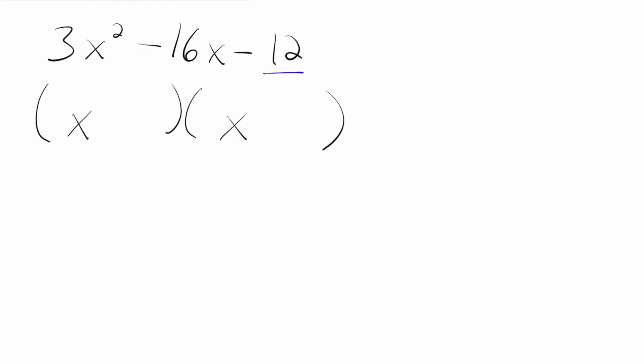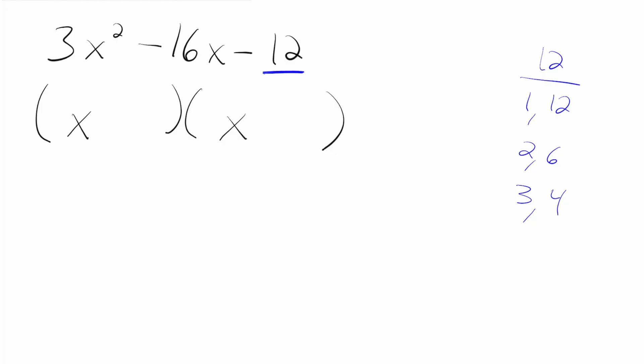I don't want you thinking about negatives or positives at all — do the signs at the very end of the problem. With that in mind, we're going to start with the number furthest on the right, that being 12, and write down all the factors of 12: 1 and 12, 2 and 6, and 3 and 4. Then we get to the first new step: we also get all the factors of the number on the left, in this case 3. So 1 and 3, and that's it.